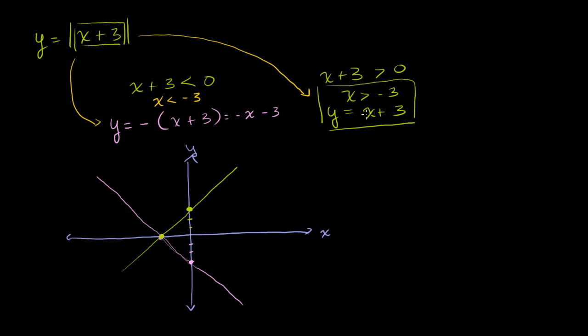This absolute value function looks like the purple graph when x is less than negative 3, and like the green graph when x is greater than negative 3. So the combined graph looks like a strange v-shape. When x is greater than negative 3 the slope is positive, but when x is less than negative 3 we take the negative of the function and get a negative slope. This v-shaped graph is indicative of an absolute value function.